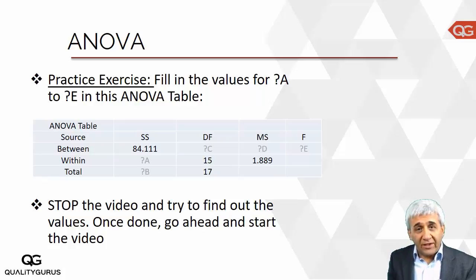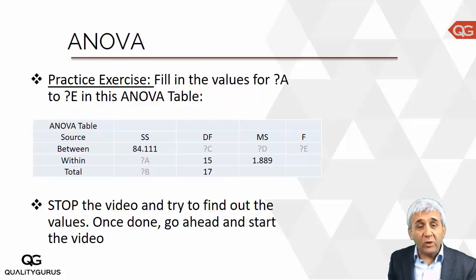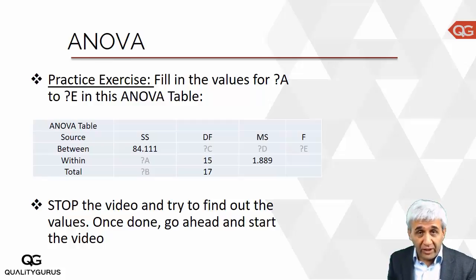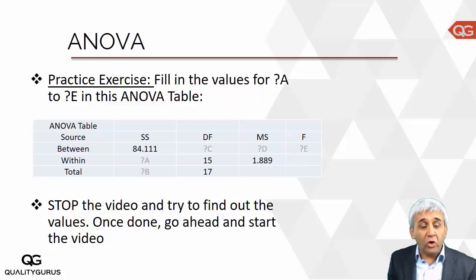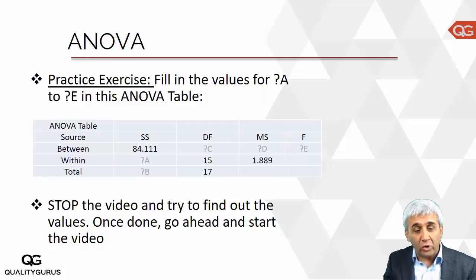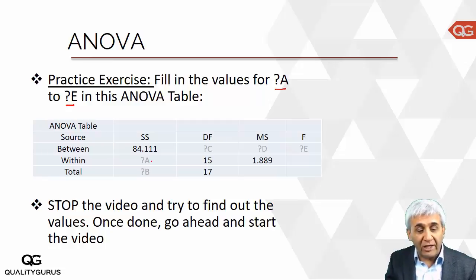Before we complete this section on ANOVA, let's do one more practice exercise which might help you in your exam. I have given an ANOVA table with some missing values, and there's a good chance that these sorts of questions might come in your exam. Here I am looking at missing values — question mark A to question mark E — these are the values I need to calculate: A, B, C, D, and E.